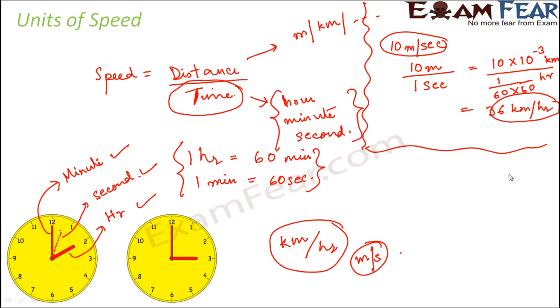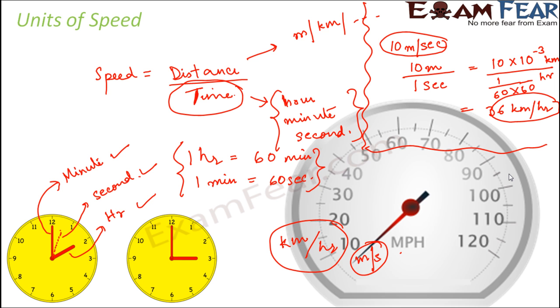So basically 10 meter per second is equal to 36 kilometer per hour. These are the common units of speed. You would have seen these units written on the meter present inside your car or your bike. Have you ever seen the meter which shows the speed of your vehicle? As you start driving fast, the hand keeps moving very fast. At the end of it, you will see it would be written kilometer per hour or meter per hour. This is how we measure speed.